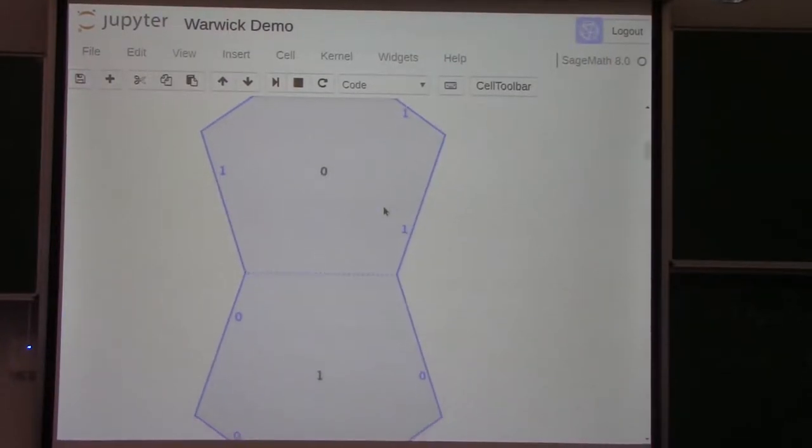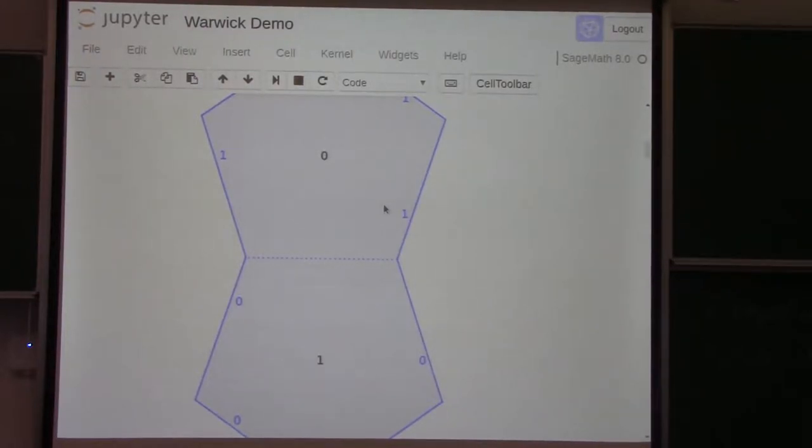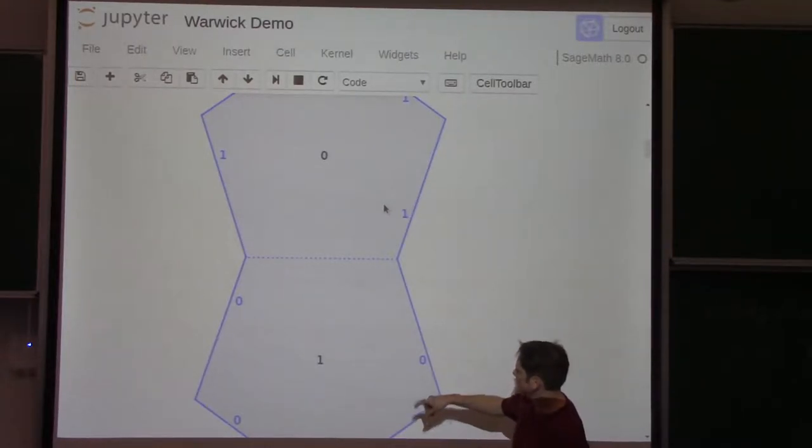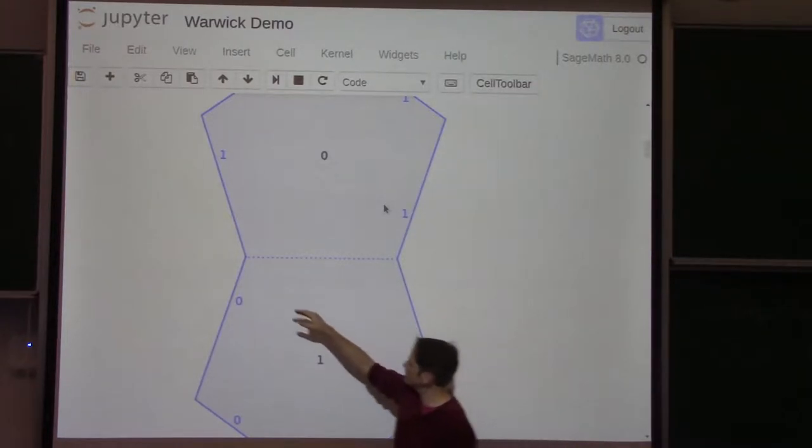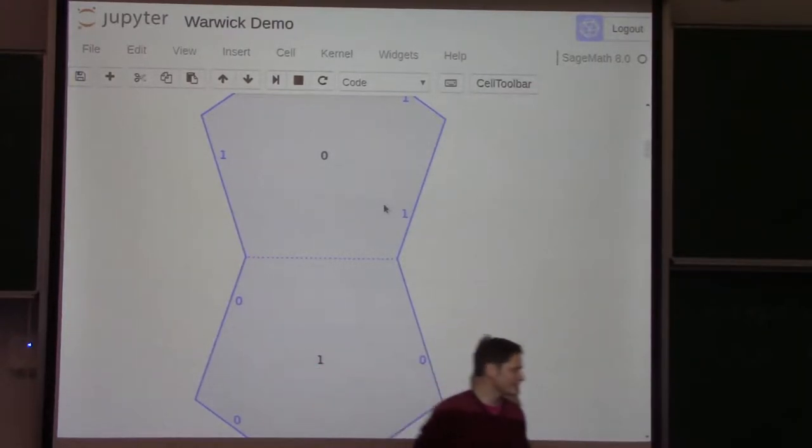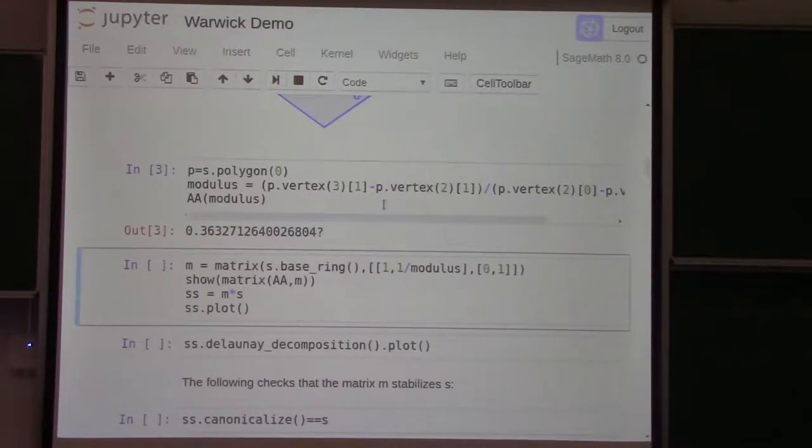So, one example is the double pentagon. I just constructed the double pentagon for you. Actually, this is a translation surface, and the way it's labeled, the polygons are labeled by numbers, and then the edges are glued by the polygon they're labeled to. In this case, this completely determines the surface because you have to glue parallel sides to parallel sides. So like this edge over here is glued to this edge up here.